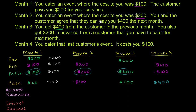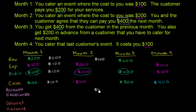Now let's go to month two. You cater an event where the cost to you was $200, and you and the customer agree that they can pay you $400 the next month. Because you performed the catering that month and it's worth $400, on the accrual basis you would say that you earned $400 of revenue in this month, even though the customer did not pay you cash. The way you account for that on your balance sheet is you say you are owed $400 — this is accounts receivable, essentially stuff that other people owe you. It's an asset: other people have an obligation to you, so you have an accounts receivable of $400.